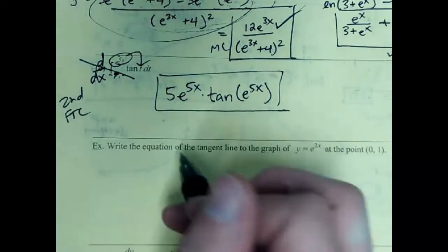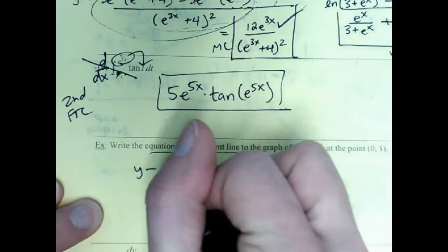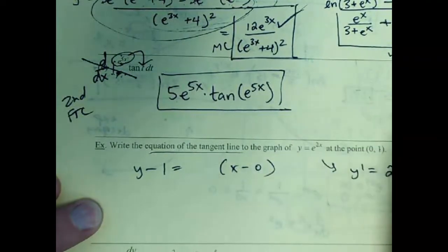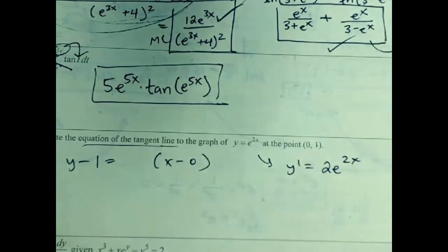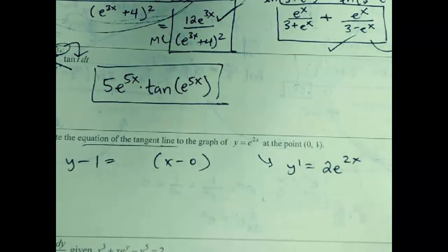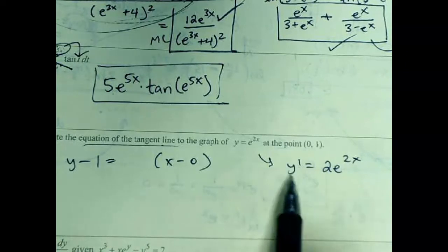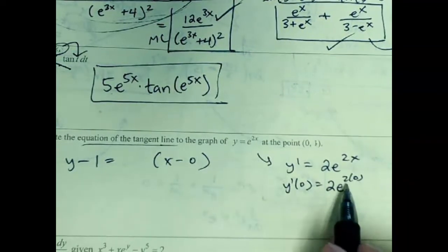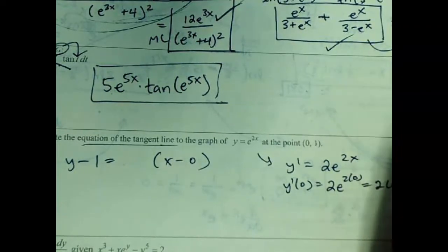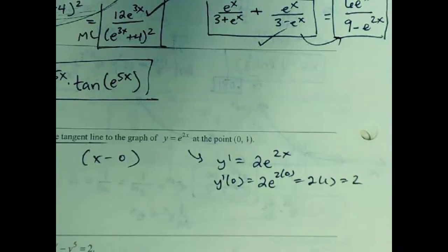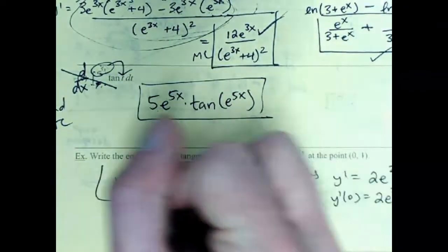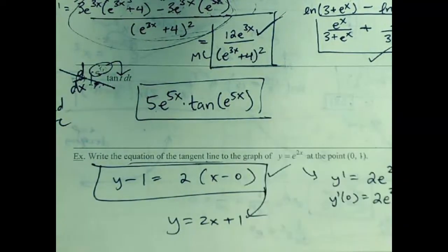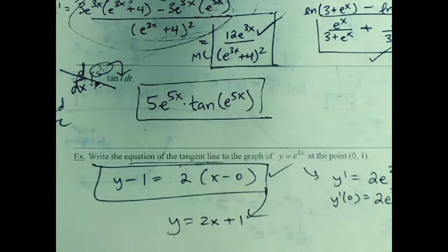Write the equation of the tangent line: y minus y1 equals m times (x minus x1). To get the slope m, take the derivative, which is 2e to the 2x, then plug in x equals 0: 2e to the 2 times 0 equals 2e to the 0 equals 2 times 1 equals 2. So m equals 2. Plug it in and there's your tangent line equation. You can simplify to y equals 2x plus 1, but typically point-slope form is fine.